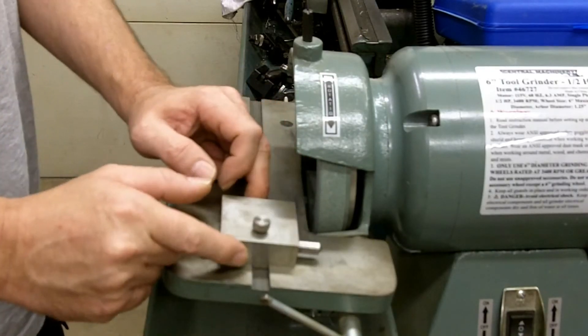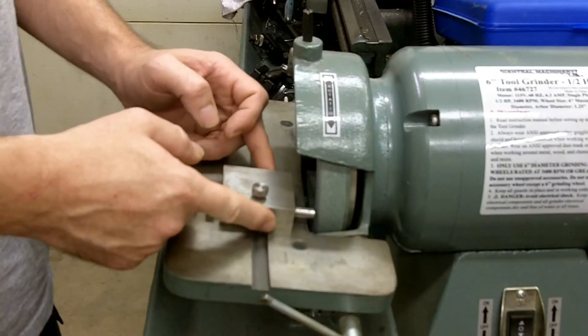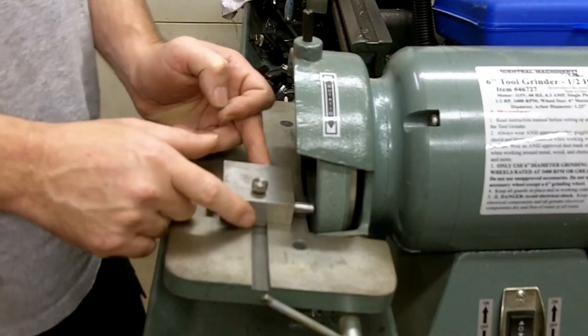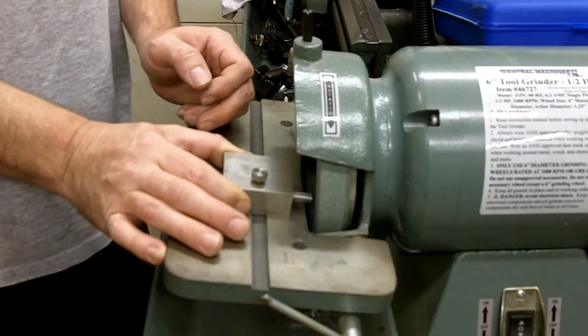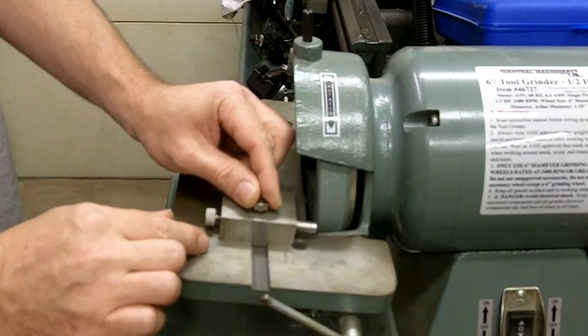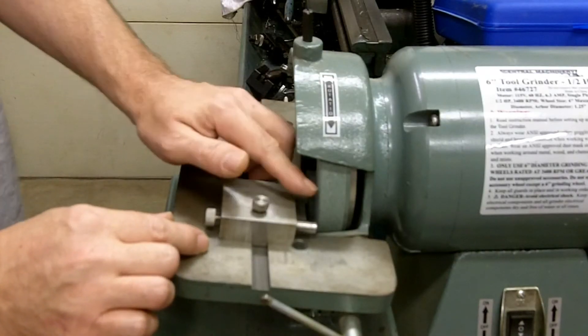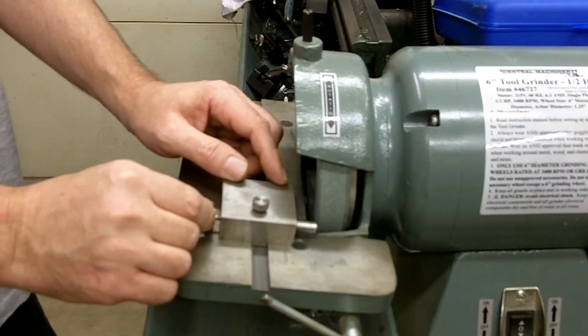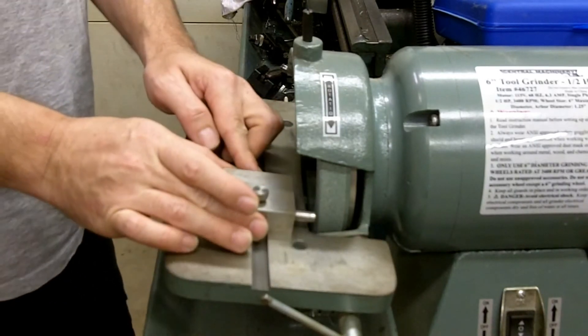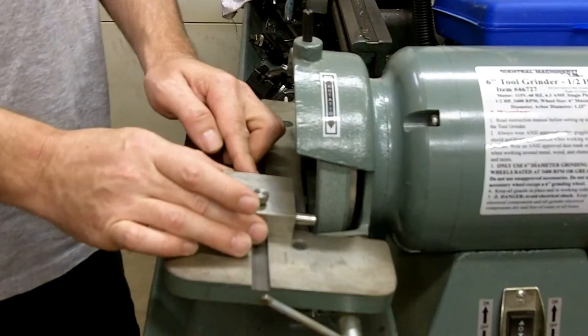There you go. So once you make contact with the wheel, back out, go ahead and lock it down, make a slow controlled pass across here, and then come back out and loosen this up slightly. If your wheel is not dressed all the way, take just a small bit more, lock it down, and do the same thing again.